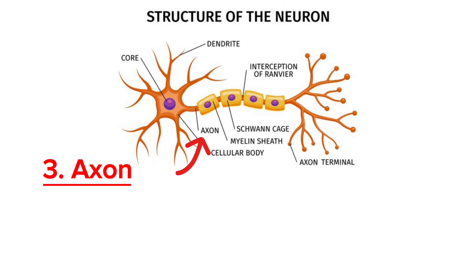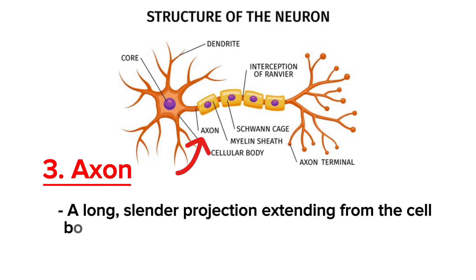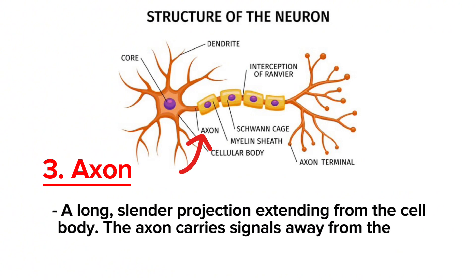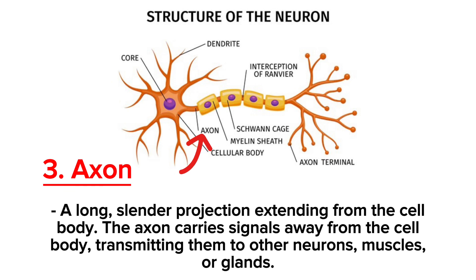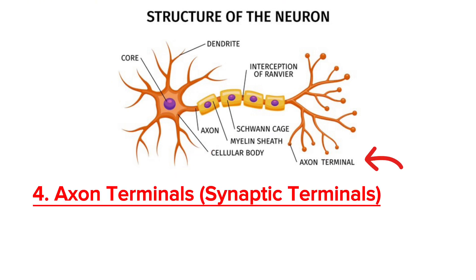The axon is a long cylindrical projection extending from the cell body. The axon carries signals away from the cell body, transmitting them to other neurons, muscles, or glands. Next are the axon terminals, also called synaptic terminals.